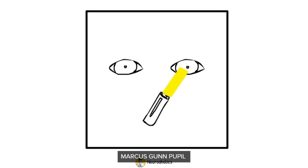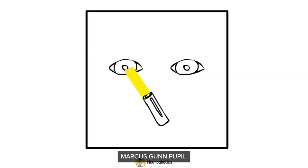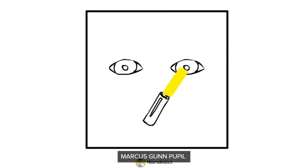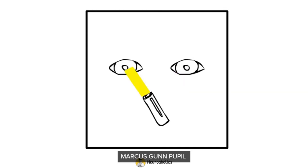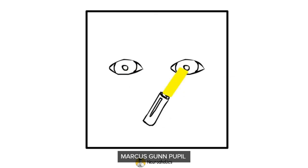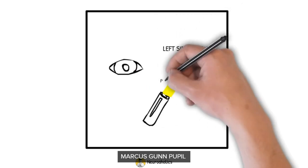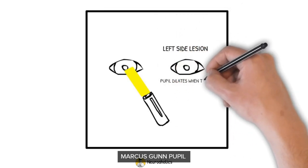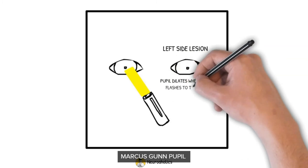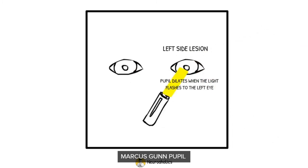In the illustration shown, on which side do you think the lesion is located? Yes, the lesion is located on the left side, marked by the dilation of the left eye when the flashlight is moved to the left eye.